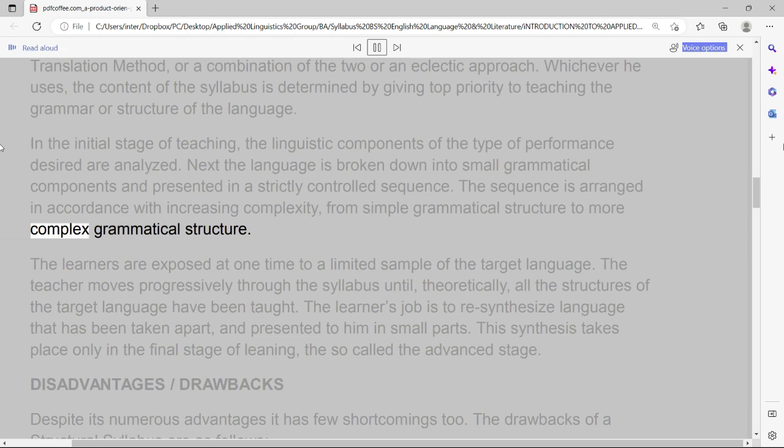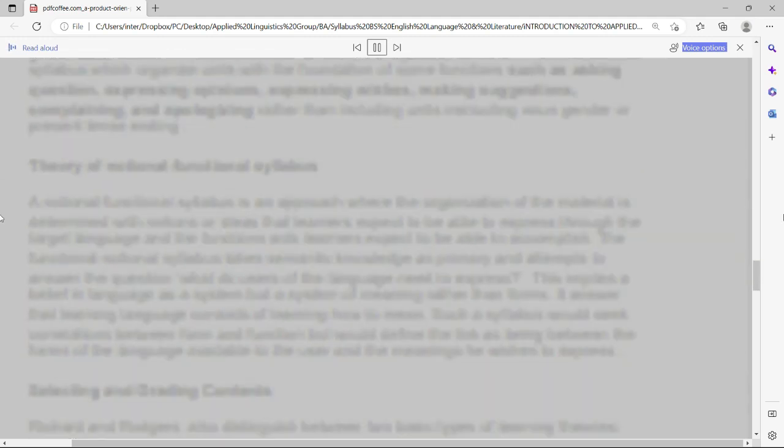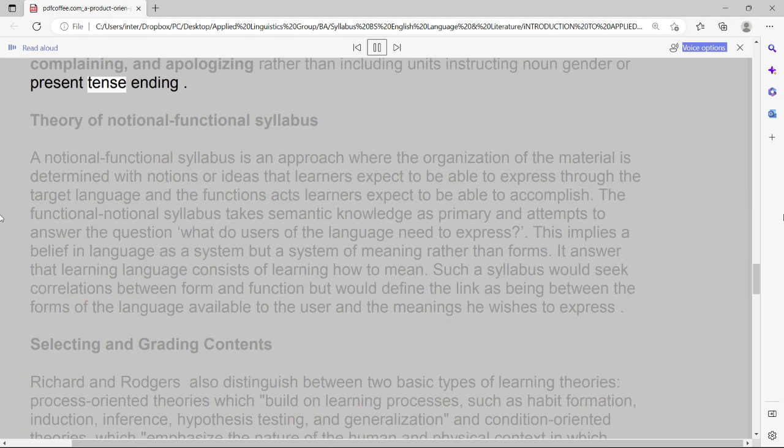According to Wilkins, 1972, proponents of this kind of approach believe that the usage of language for learners is more important than the digestion of an unapplied system of grammatical forms. Therefore, a notional functional syllabus is a kind of communicative syllabus which organize units with the foundation of some functions such as asking question, expressing opinions, expressing wishes, making suggestions, complaining, and apologizing rather than including units instructing noun gender or present tense ending.